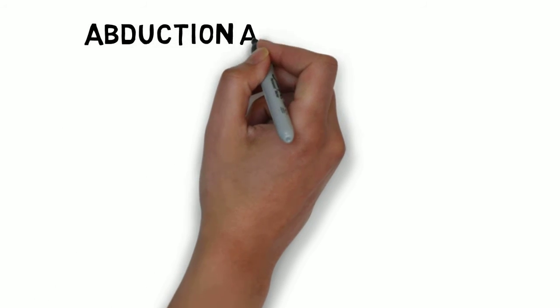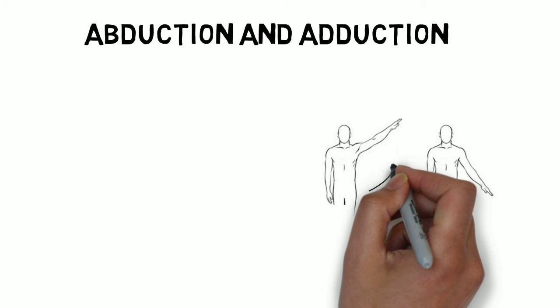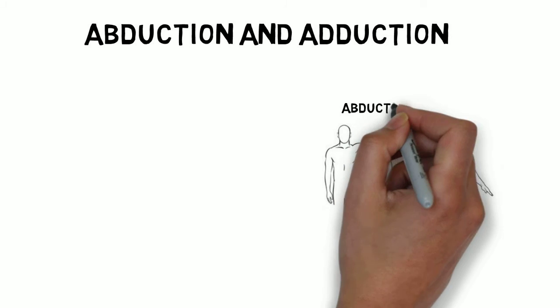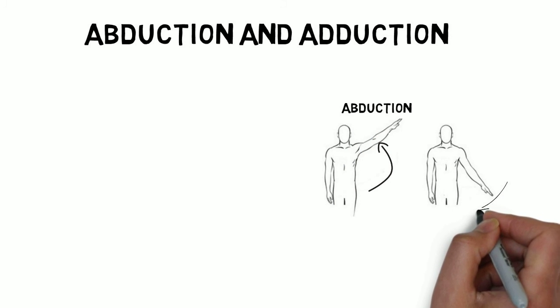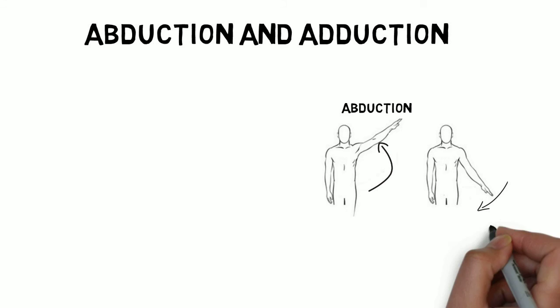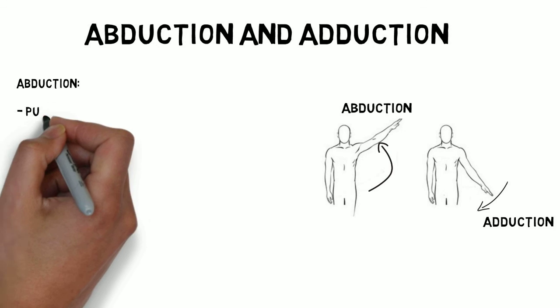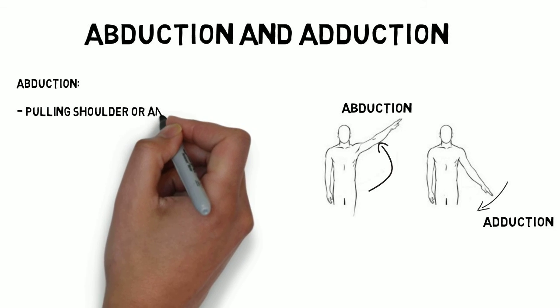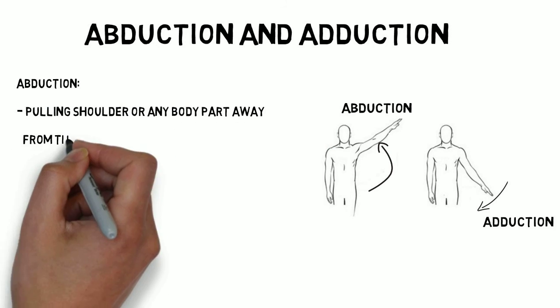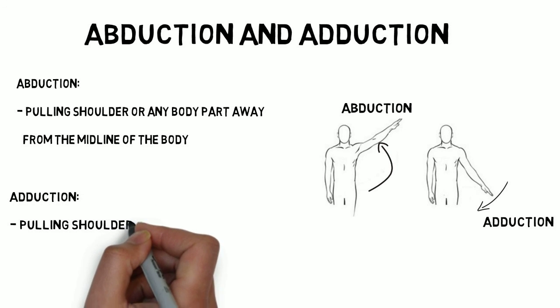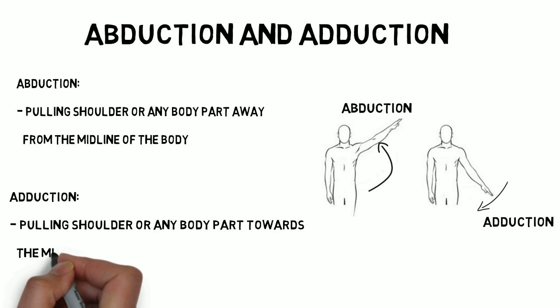Coming to abduction and adduction: abduction is the movement in which you take your shoulder, or any other body part, away from the midline. Adduction is when you take your shoulder or any body part towards the center or midline of the body. So pulling away from the midline is abduction, and pulling towards the midline is adduction.